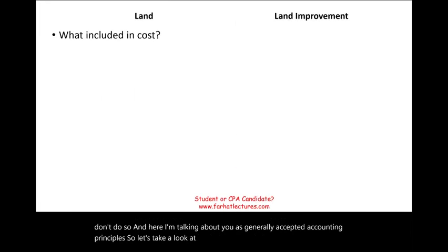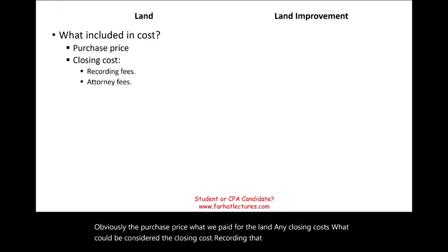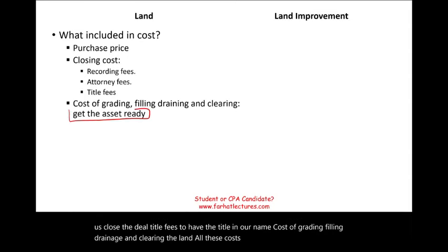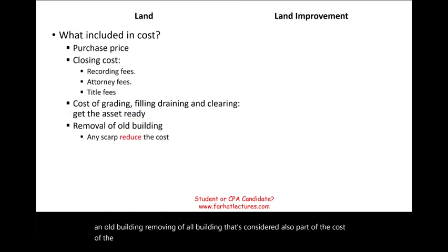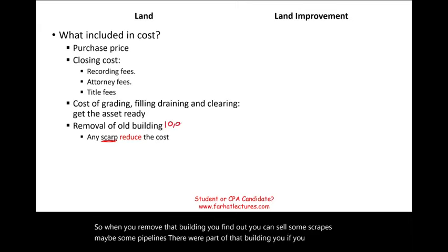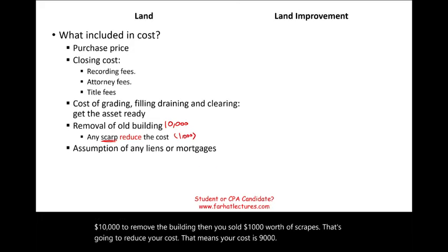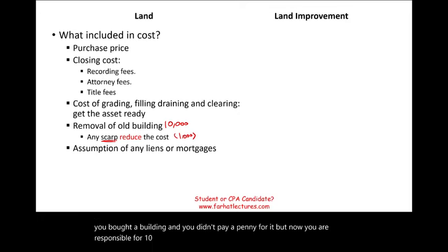Let's look at what's included in the cost of land: the purchase price, any closing costs such as recording fees, attorney fees, title fees, and costs of grading, filling, drainage, and clearing. Removing an old building is also part of the cost of land. If you then sell scrap from that building — say it costs $10,000 to remove but you sell $1,000 of scrap — your net cost is $9,000. Any assumption of liens or mortgages is also included, because if you take over the loan, that debt is your cost.